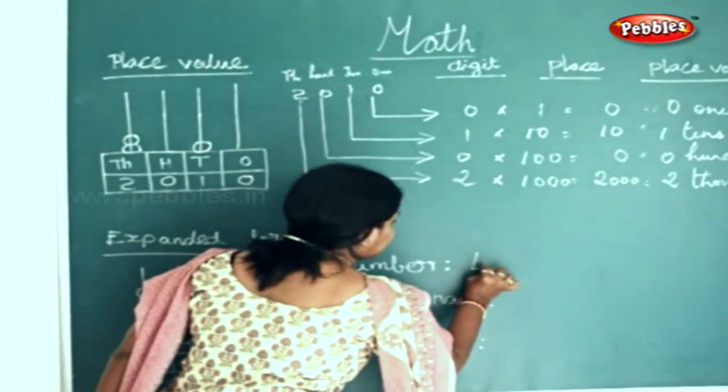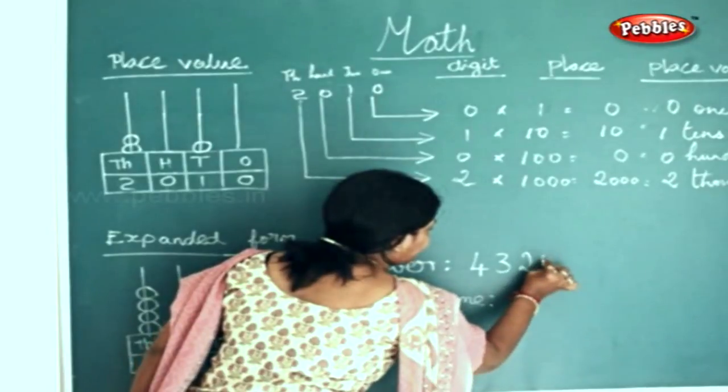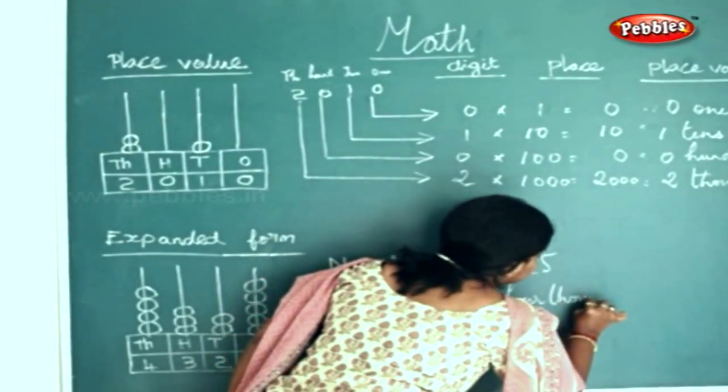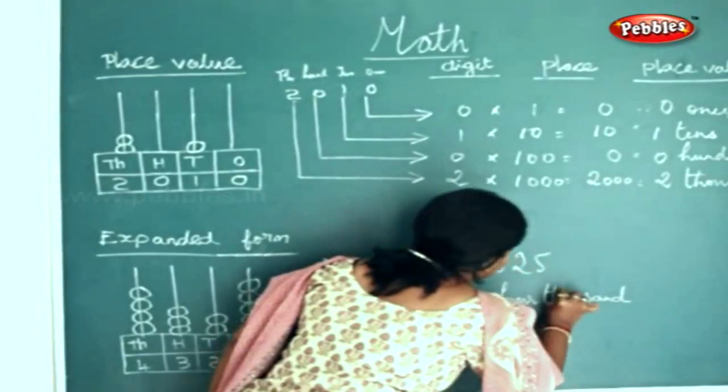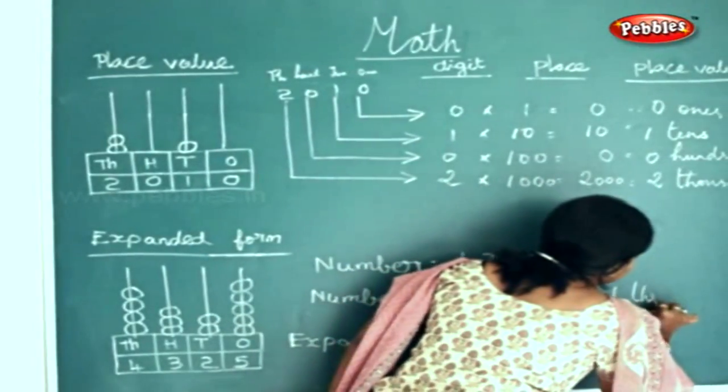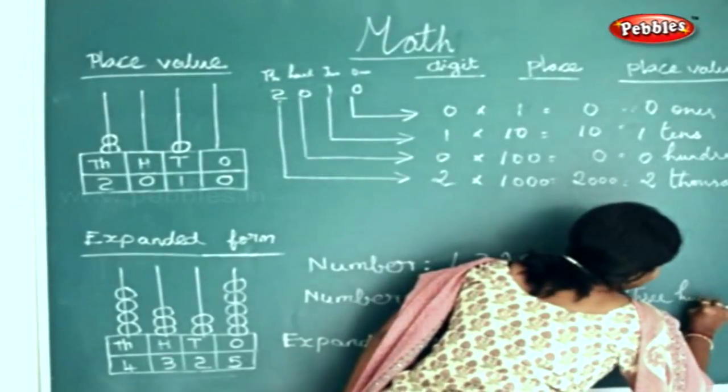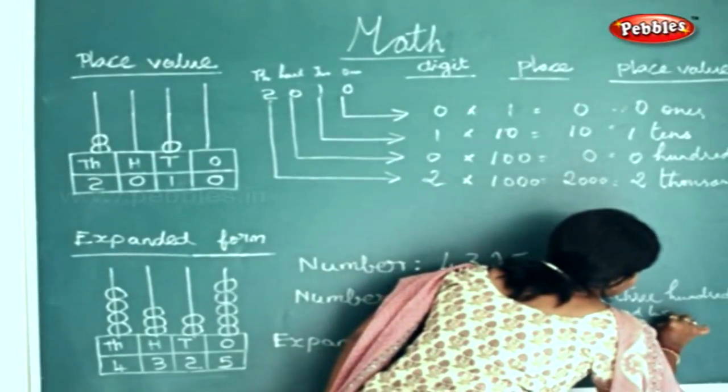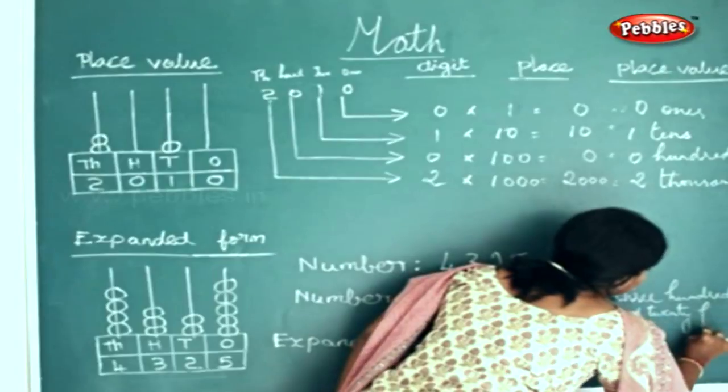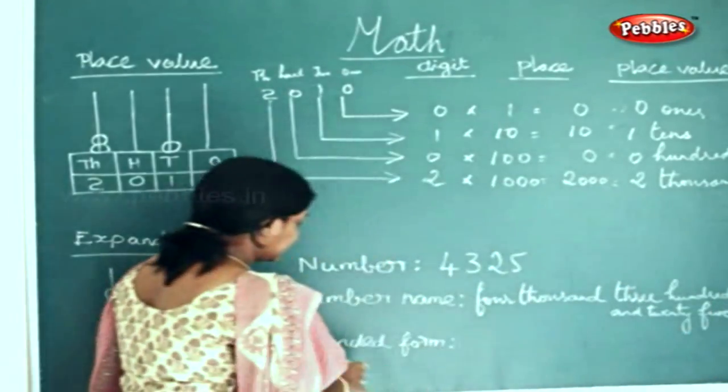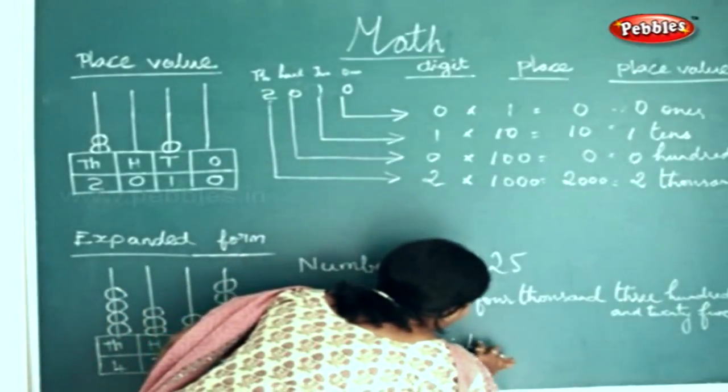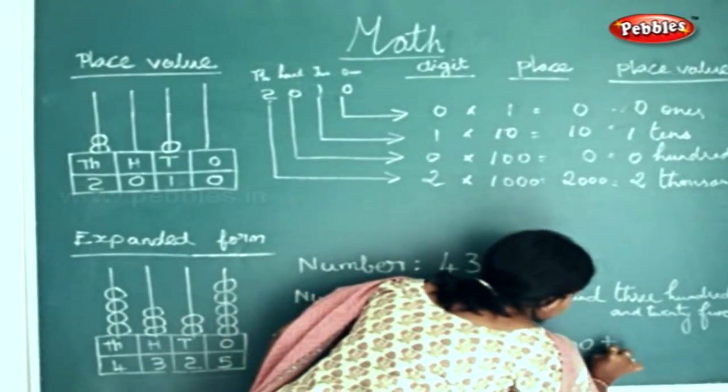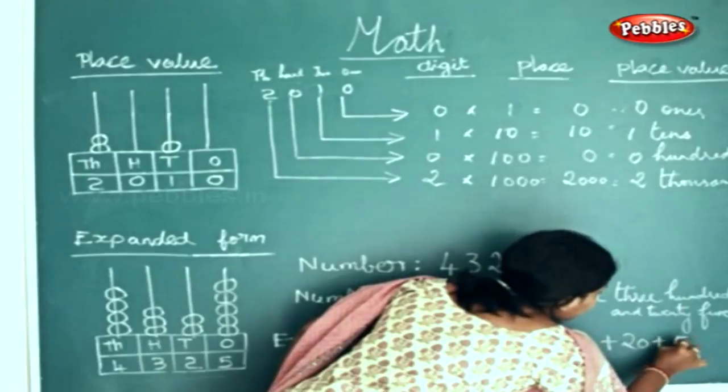The number name is four thousand three hundred twenty-five. The expanded form will be 4000 plus 300 plus 20 plus 5.